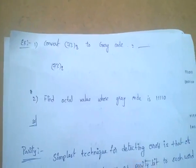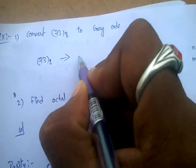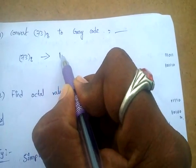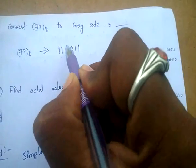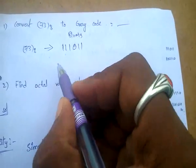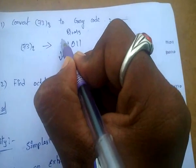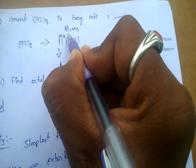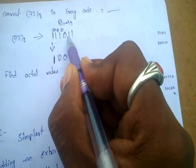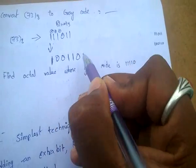Convert 73 base 8 (octal) to gray code. For this, first convert into binary. For binary: 7 means 111, for 3 it is 011. Now converting into gray code — write first digit as same, then find exclusive-OR between adjacent bits: 1 XOR 1 gives 0; 1 XOR 1 gives 0; 1 XOR 0 gives 1; 0 XOR 1 gives 1; 1 XOR 1 gives 0.